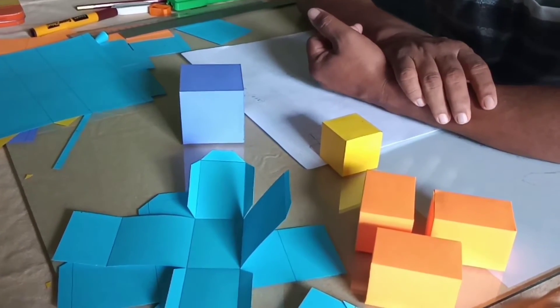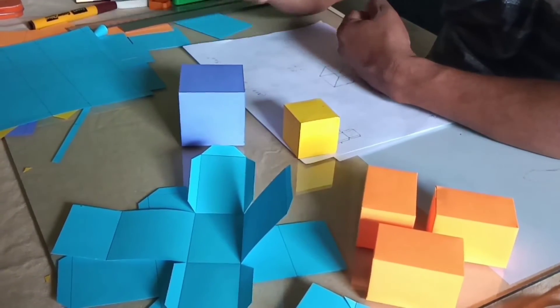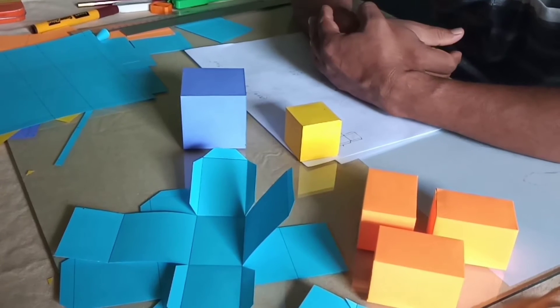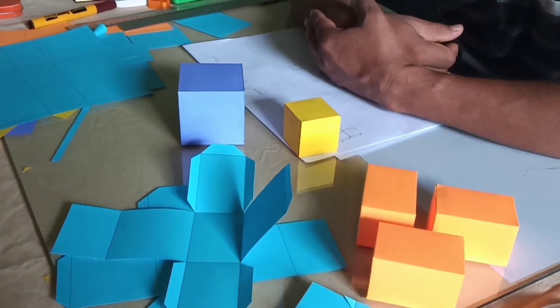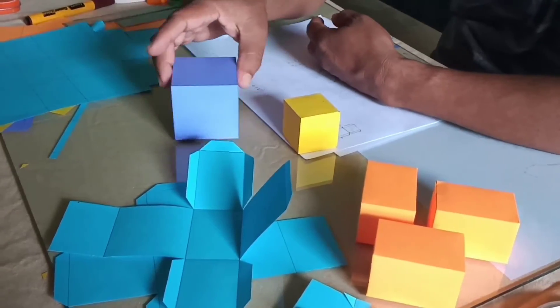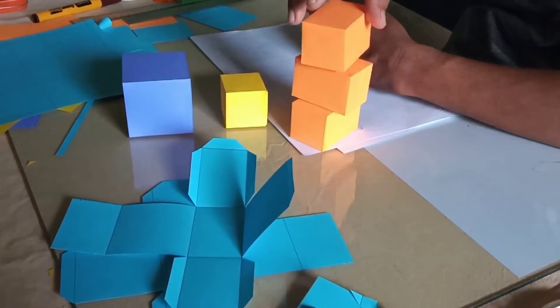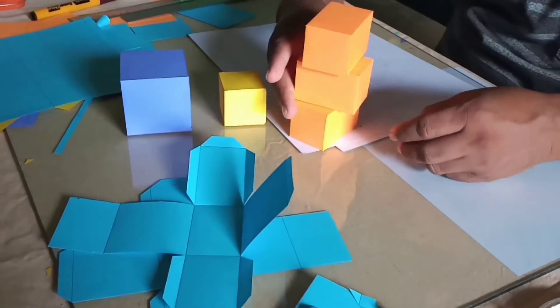I've made the two cubes. The measurement depends on what size you want them to be, so you can choose what a and b can be. I've made these two cubes and three cuboids. Now I'm making the other three cuboids.